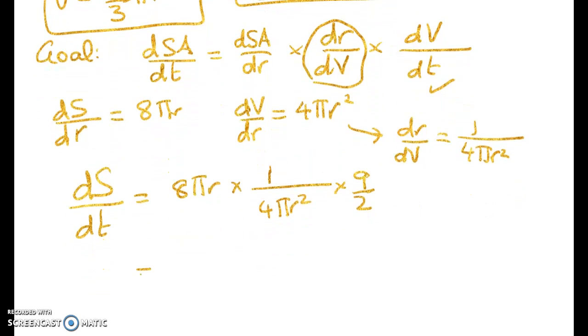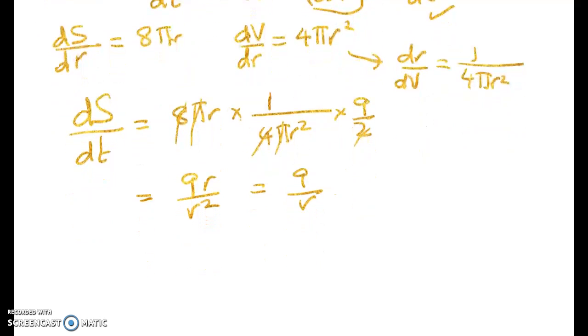So when I clean that up, the pi's disappear. What else do I end up with? I've got 4 twos here, 4 twos are 8 and 8 here. So we get 9r over r squared, which is 9 over r. So that's a very straightforward expression.